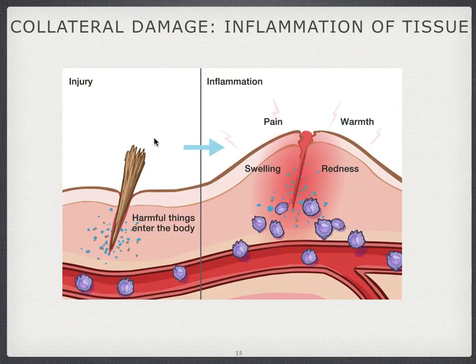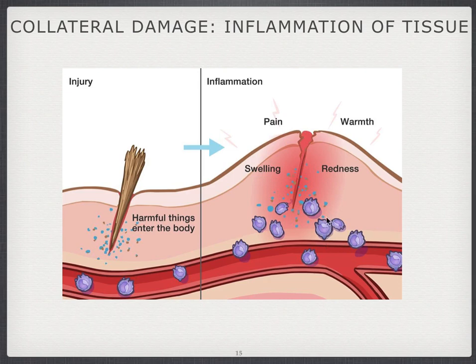Of course, you get collateral damage, because these toxic substances thrown out of the cell do not discriminate — they don't just attack the parasite, they'll also attack healthy tissue. This causes inflammation, which has been discussed in classes by Leonie Belliars. What happens is you get swelling through edema, redness, an increase in temperature to make processes work harder, and of course it hurts.